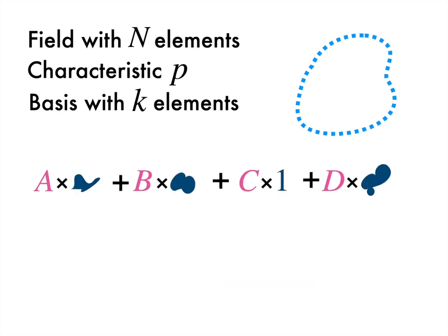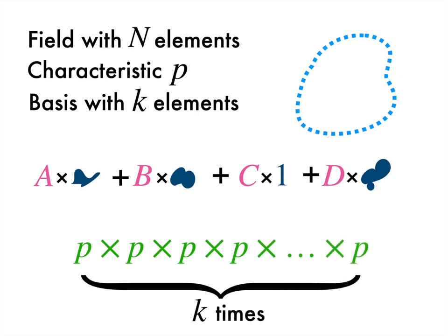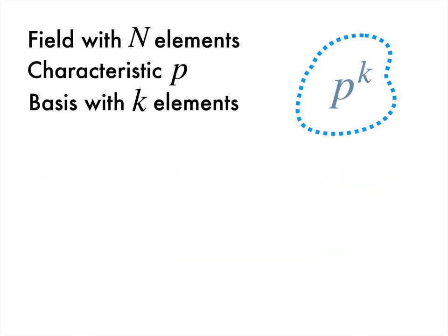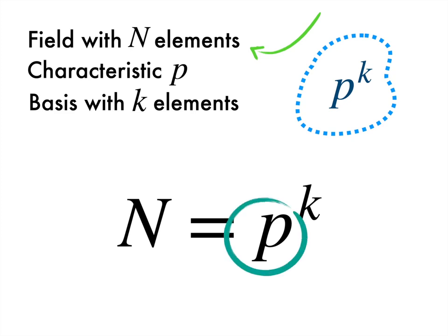There are p to the power k things in this space, which was the field we started out with. See, what we've done is we took a random field with n elements and using clever reasoning, we showed that this number must be some sort of prime power. The prime is whatever the characteristic of the field is. And k is however many elements must go into a basis if the field is viewed as a vector space instead. There cannot be a finite field that has size that isn't a prime power. And therefore, the methods we've been using will only apply when n is such a number.